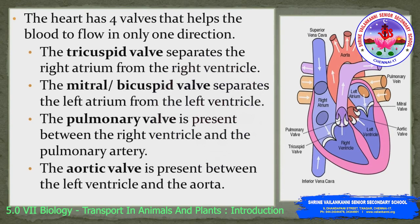The heart has four valves that ensure blood flows in only one direction. The four valves are: the tricuspid valve, the mitral or bicuspid valve, the pulmonary valve, and the aortic valve. The tricuspid valve separates the right auricle from the right ventricle, and the bicuspid valve separates the left auricle from the left ventricle. The pulmonary valve is present between the right ventricle and the pulmonary artery, whereas the aortic valve is present between the left ventricle and the aorta.